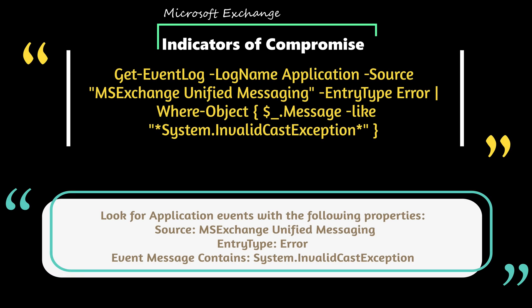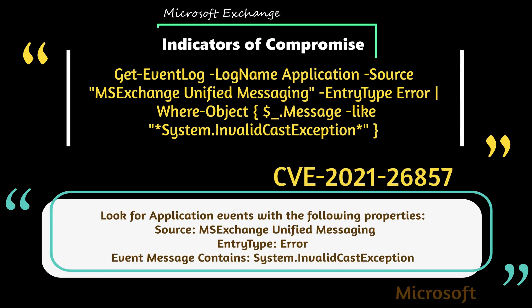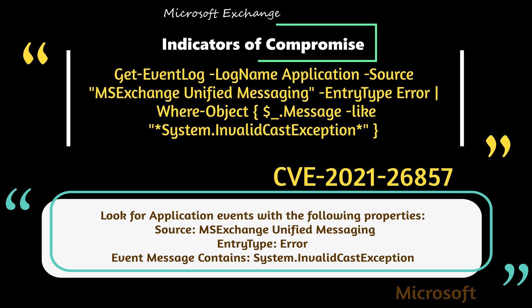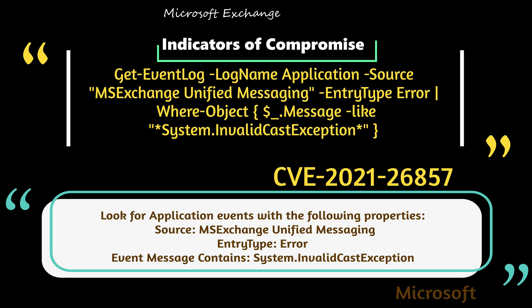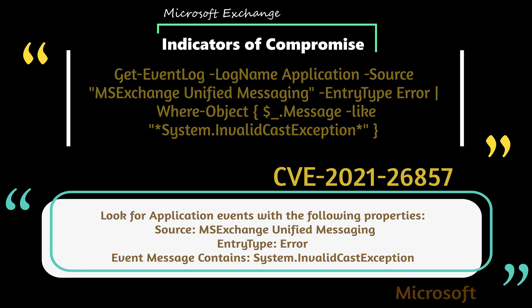To detect CVE-2021-26857, Microsoft states exploitation of this deserialization bug will create application events with the following properties: Source — MS Exchange Unified Messaging; Event Type — Error; Event Message contains System.InvalidCastException.